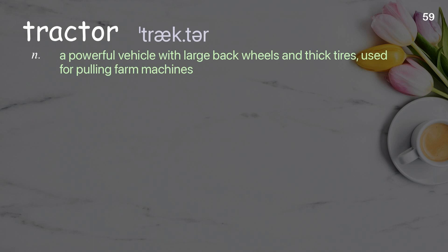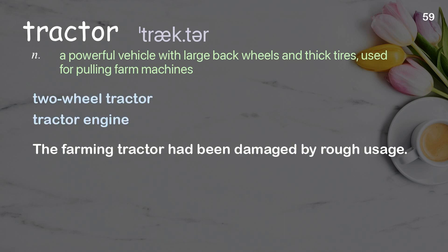Tractor: a powerful vehicle with large back wheels and thick tires, used for pulling farm machines. Examples: Two-wheel tractor. Tractor engine. The farming tractor had been damaged by rough usage.